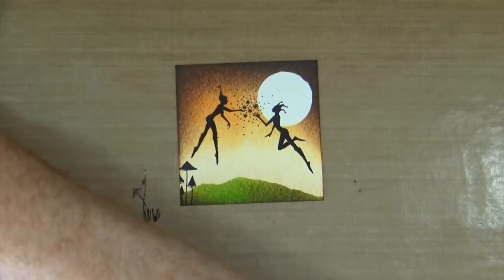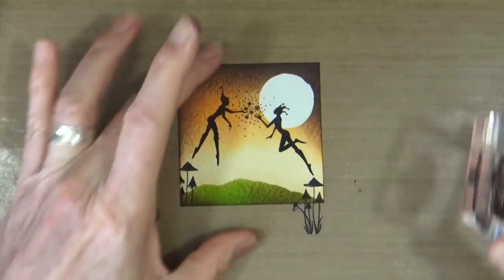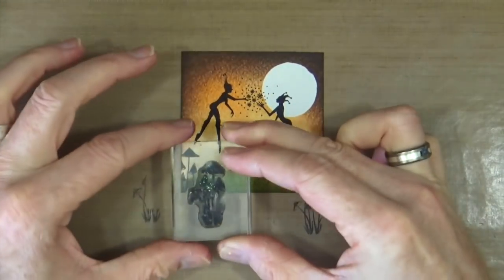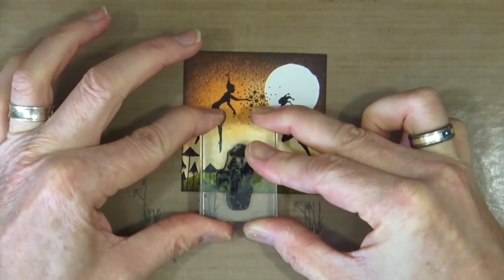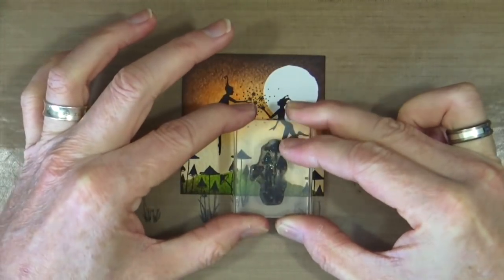Using that jet black archival ink, I'm just going to go across the bottom of my image and stamp these little mushrooms at different intervals, different heights, just to give the impression that these are growing right the way along the bottom.